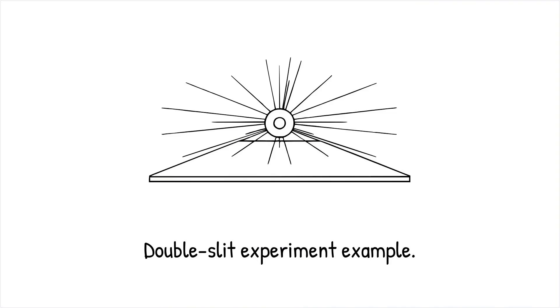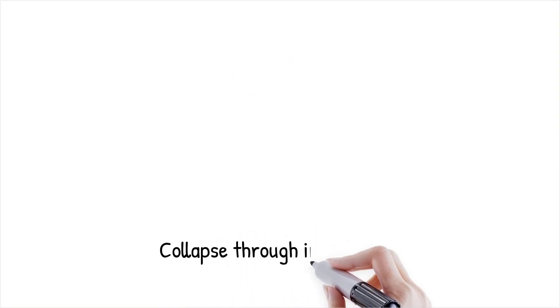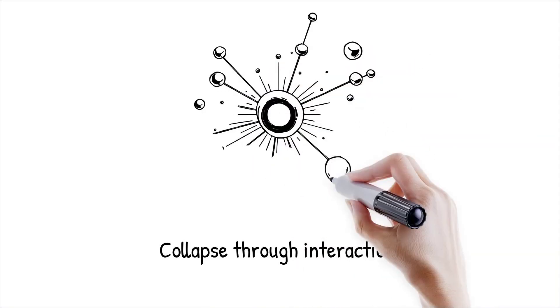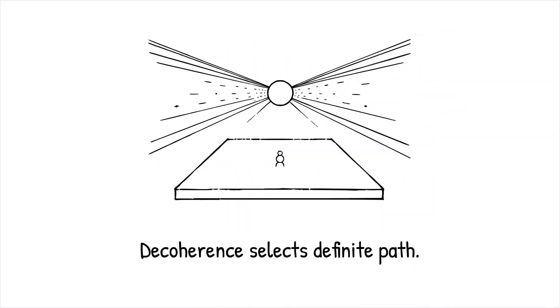In the classic double slit experiment, an electron exists in a superposition of passing through both slits. When it interacts with air molecules or a detector, the superposition collapses, and we observe it passing through only one slit. This collapse occurs due to environmental decoherence, which selects a definite path for the particle.